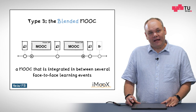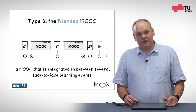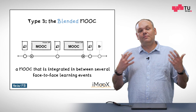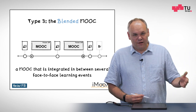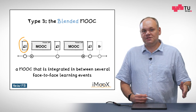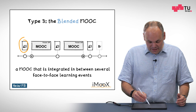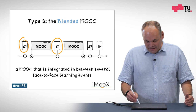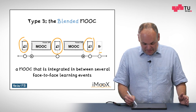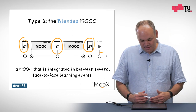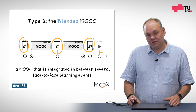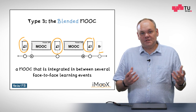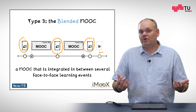Type three is the blended MOOC. This integrates the MOOC into a typical blended learning scenario. For example: a face-to-face session, then three weeks of MOOC, then another face-to-face session at the university, then another MOOC phase, and then a face-to-face session and assessment. The MOOC is integrated between several face-to-face sessions. How many face-to-face sessions depends on the teacher — mainly, the MOOC is used as online material between sessions.